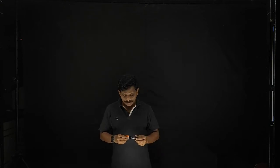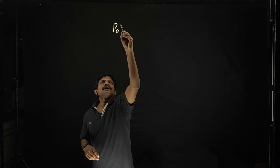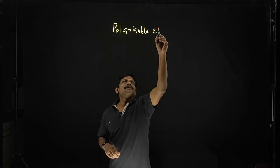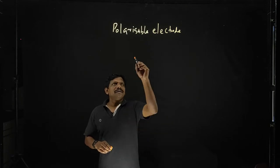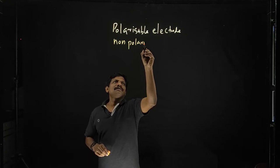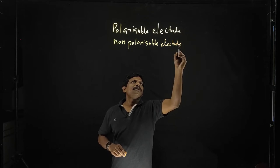Today I will give you some information about different types of electrodes. Electrodes can be generally classified into two types: one is called a polarizable electrode and the other one is called a non-polarizable electrode.